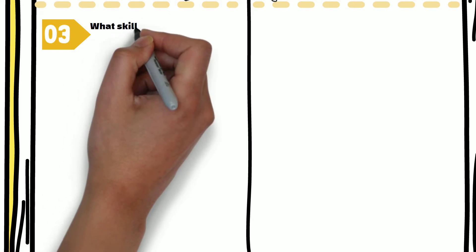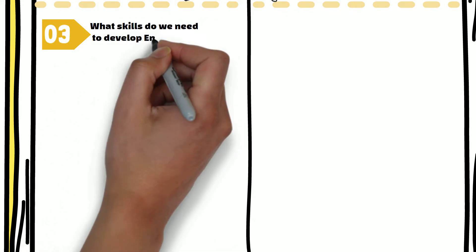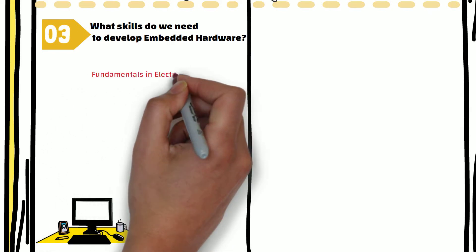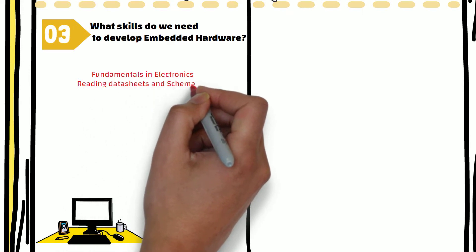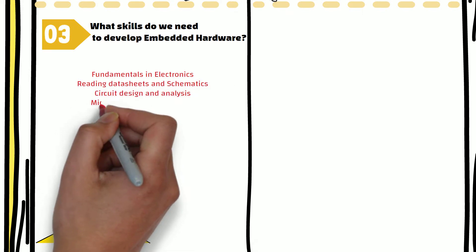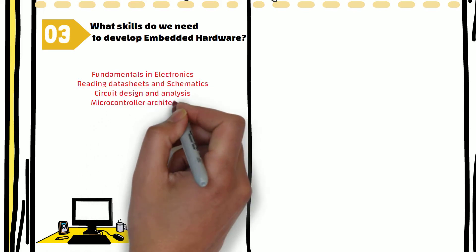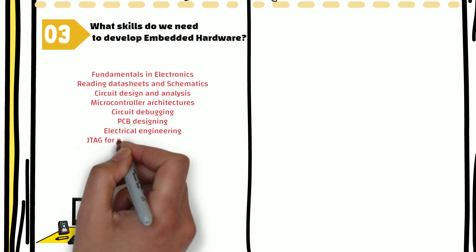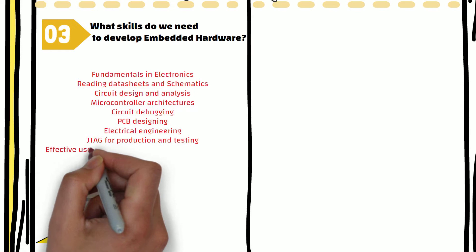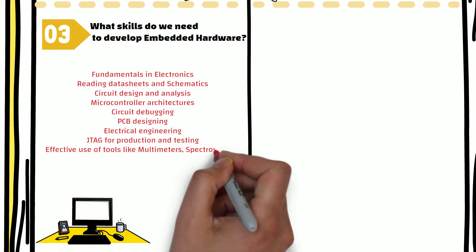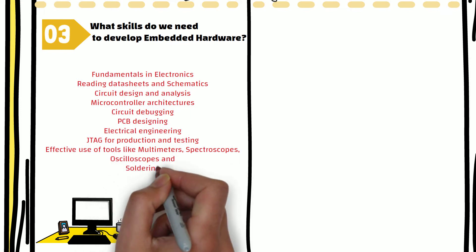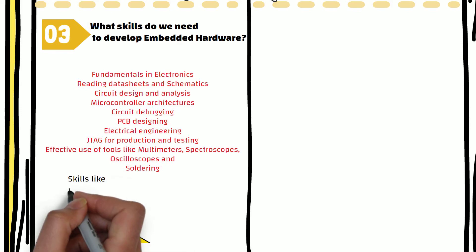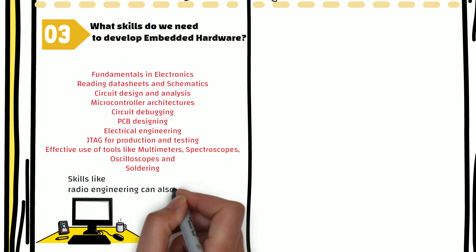So what skills do we need to develop embedded hardware? An embedded hardware engineer must have good knowledge about fundamentals in electronics, reading data sheet and schematics, circuit design and analysis, microcontroller architecture, circuit debugging, PCB designing, electrical engineering, JTAG for production and testing, use of tools like multimeter, spectroscopes, oscilloscopes, and soldering irons. These are just the basics. Depending on the product being designed, other skills like radio engineering can also be needed.